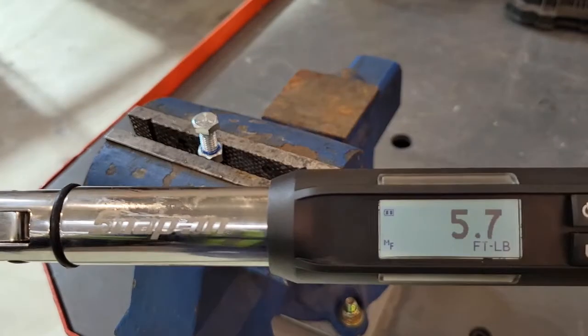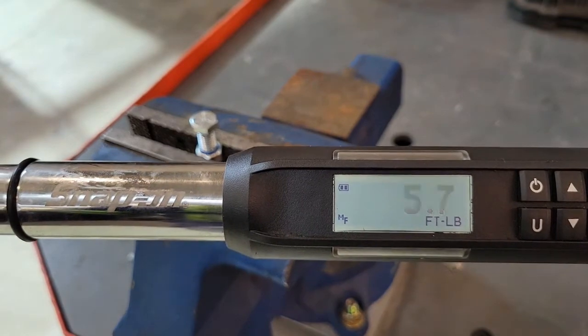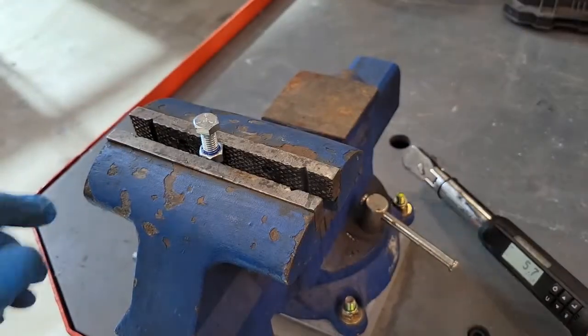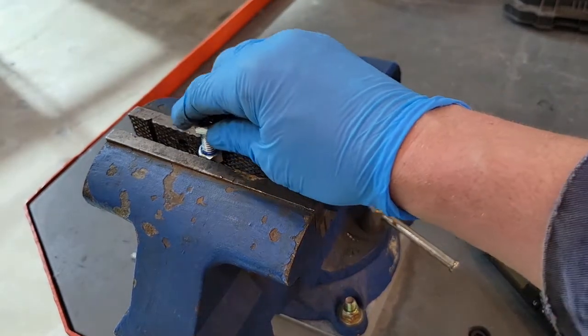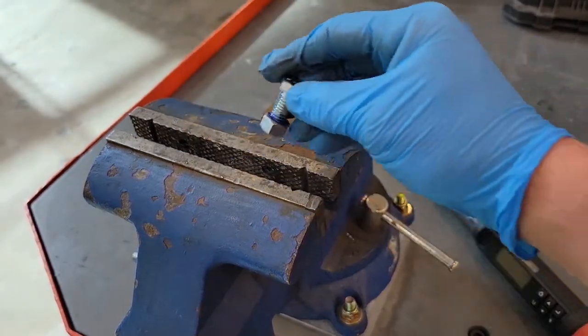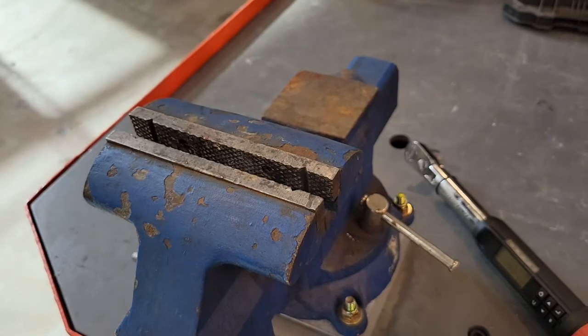Well, that didn't take much. 5.7 foot pounds. Now there's no load on the nut, it's just spun down finger tight so the only thing holding it is the thread locker.